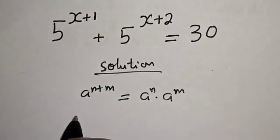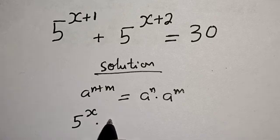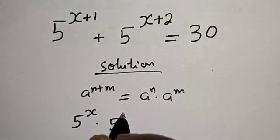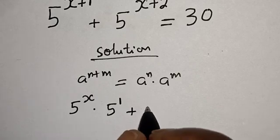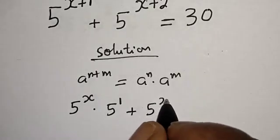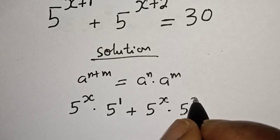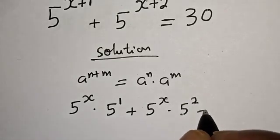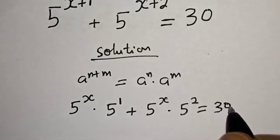Applying this rule, the equation becomes: 5 raised to power x, multiplied by 5 raised to power 1, plus 5 raised to power x, multiplied by 5 raised to power 2, is equal to 30.